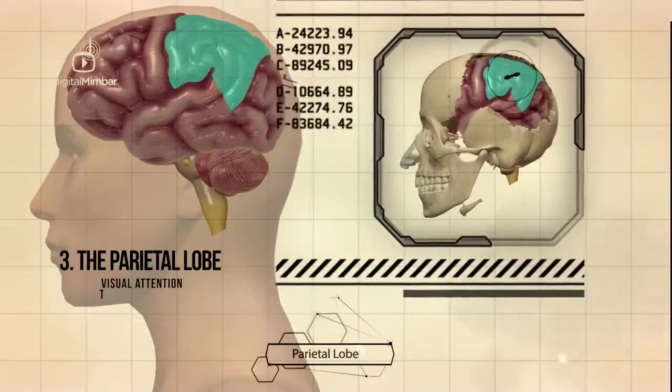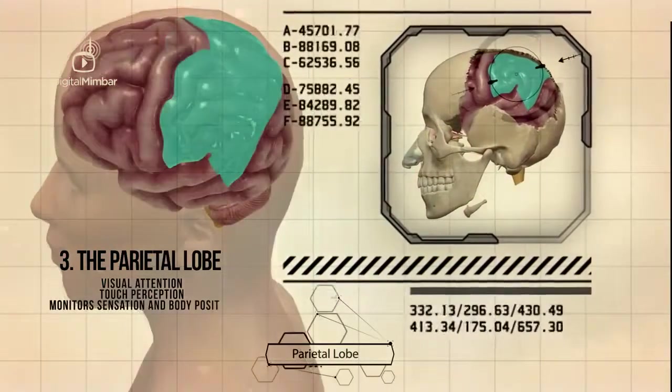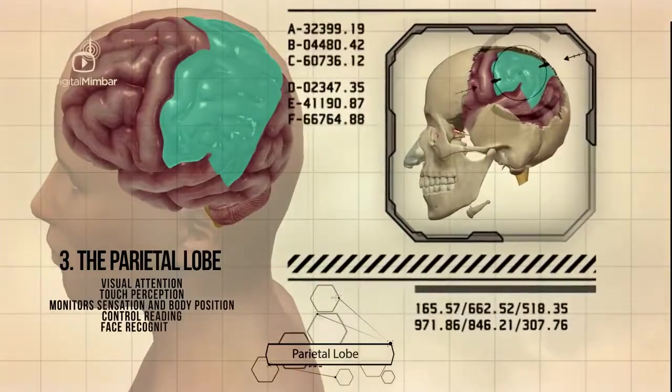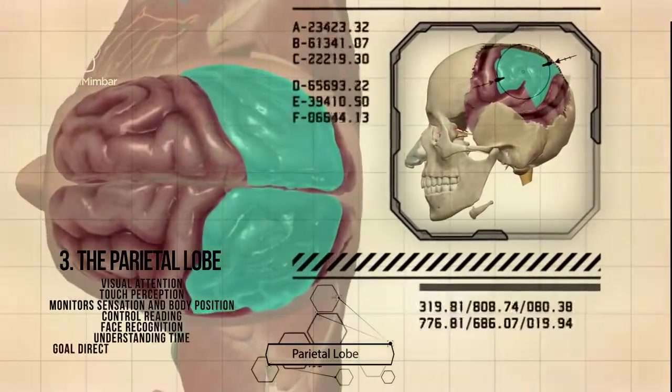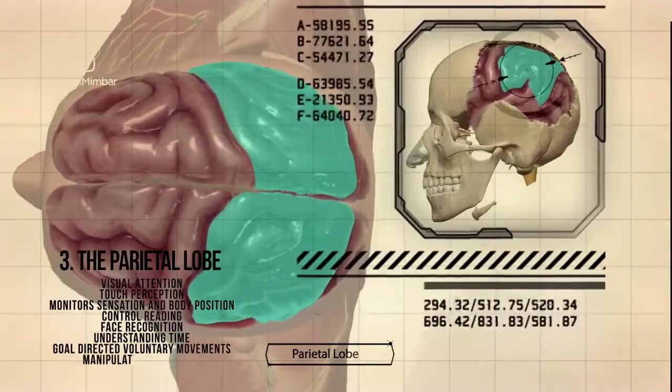The parietal lobe is responsible for visual attention, touch perception, monitoring sensation and body position, controlling reading, face recognition, understanding time, goal-directed voluntary movements and manipulation of objects.